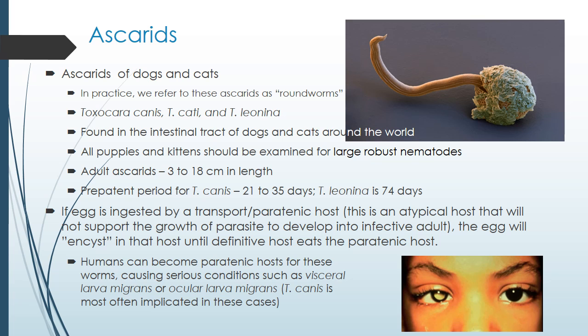Humans can also become paratenic hosts. The worms can encyst themselves, and the larvae may migrate — causing visceral larval migrans and ocular larval migrans. The larvae will migrate through the viscera and can make their way to the eye, causing blindness. So a lot of damage is done with these parasites in accidental hosts.